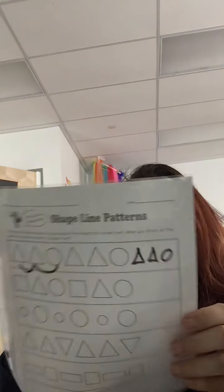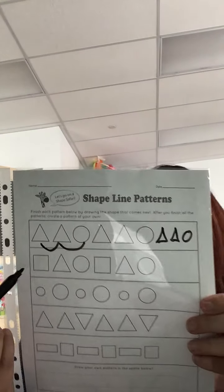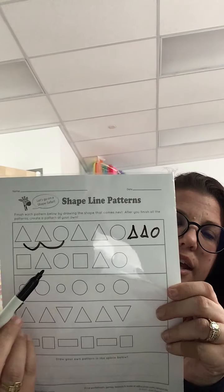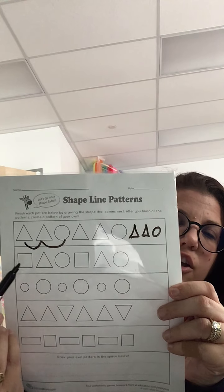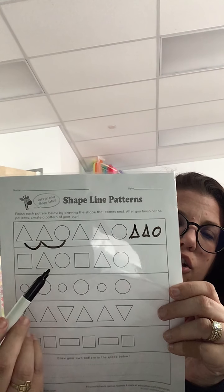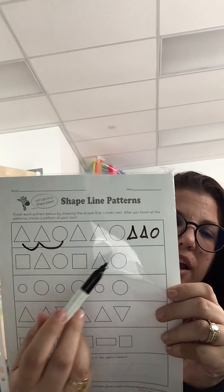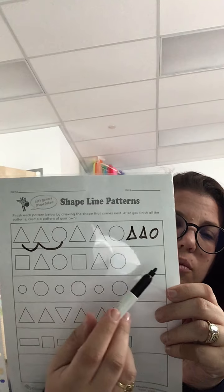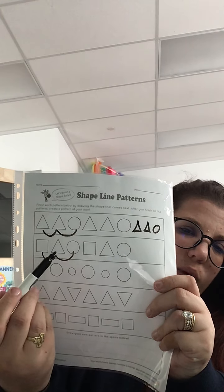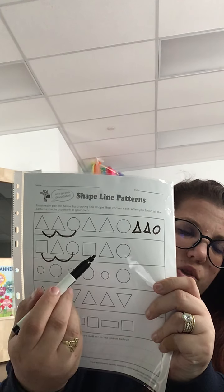Next one — this one's a little tricky. It's square, triangle, circle — square, triangle, circle. What would the next one be? This is a three-element pattern. It would be square, triangle, circle — square, triangle, circle.